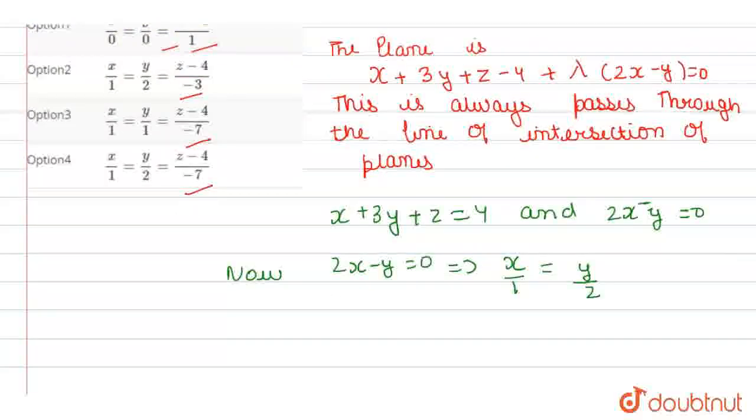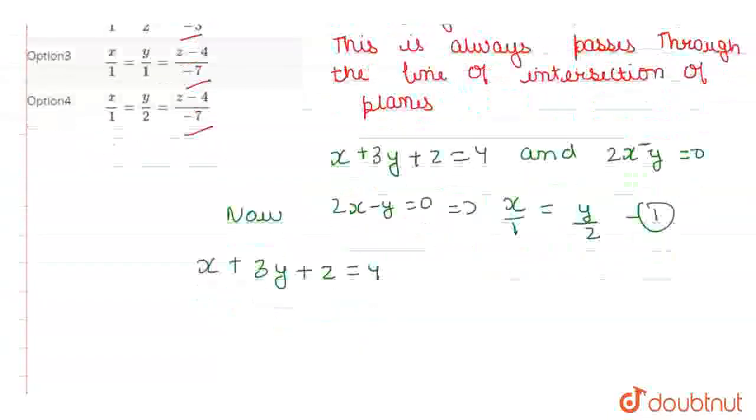Let's suppose this is our equation 1. Now we have x plus 3y plus z equal to 4. Now we're putting the value of 1 into this.